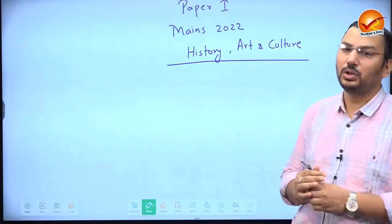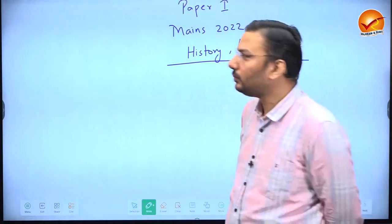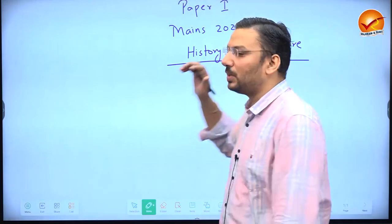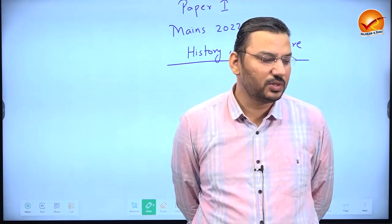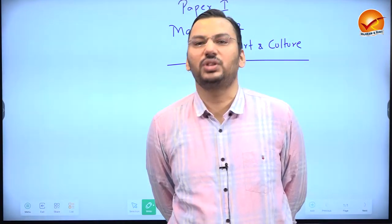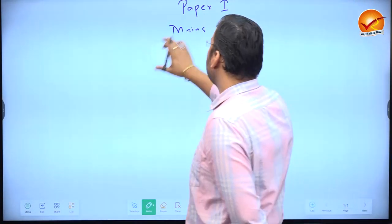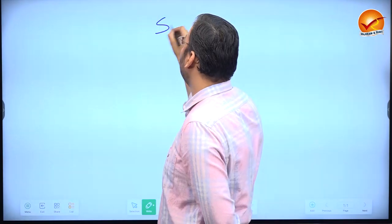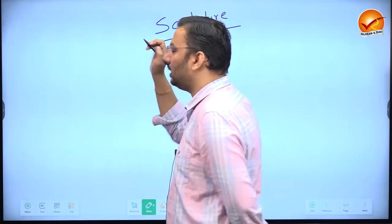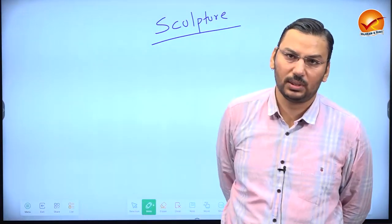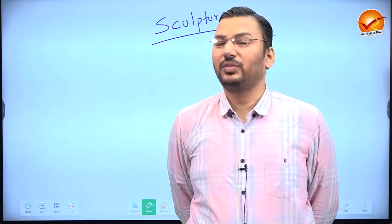Let's begin Paper 1 discussion — Mains 2022, History, Art and Culture. Question number one asks: How will you explain that medieval Indian temple sculpture represents the social life of those days? The art form in question here is sculpture — shilpkala — as a representative of social life.